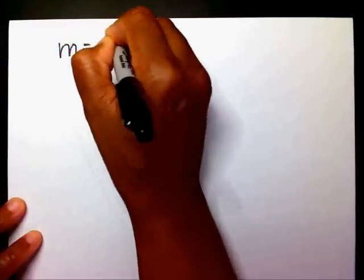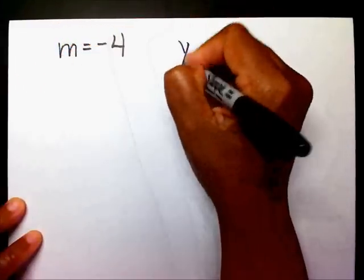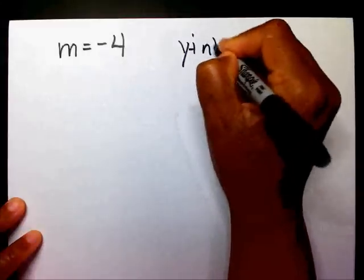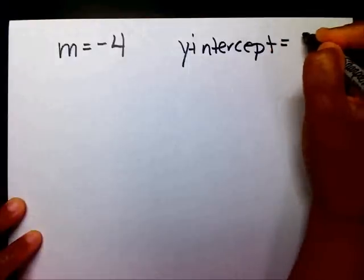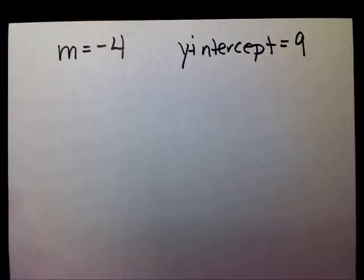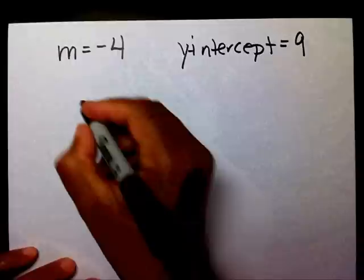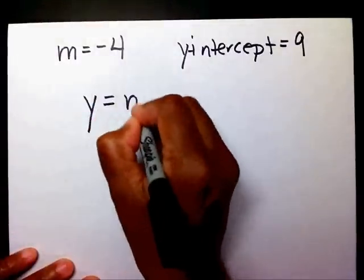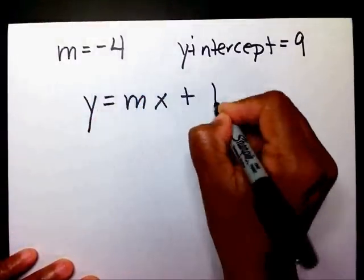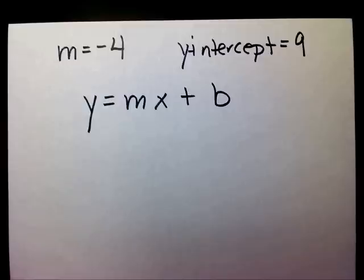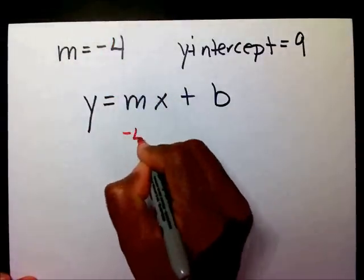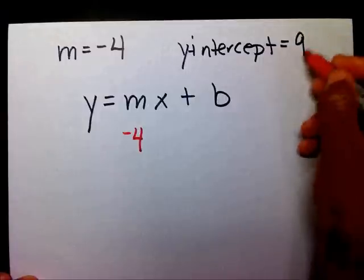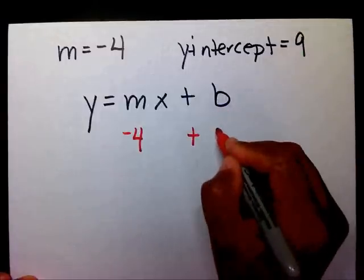If the slope equals negative 4 and the y-intercept equals 9, then I know that y equals mx plus b. I'm going to substitute negative 4 in for m, and since the y-intercept is positive 9, I substitute that in for b.